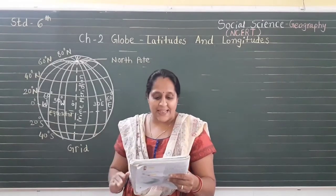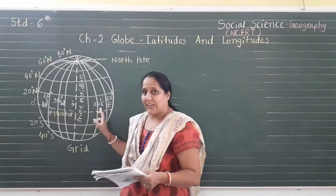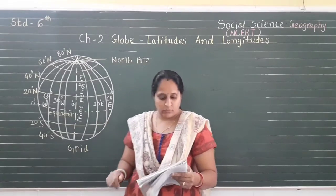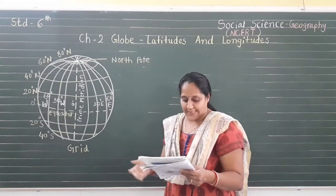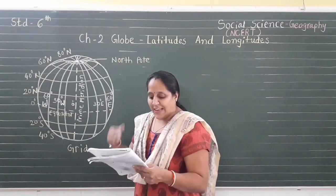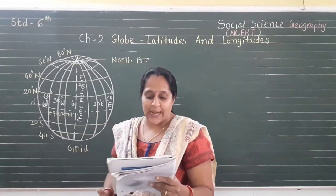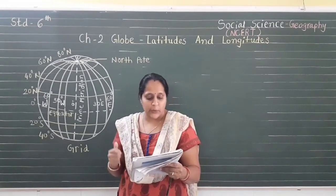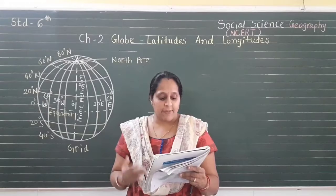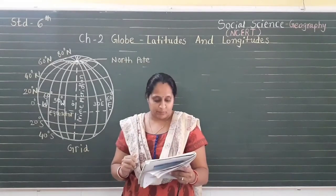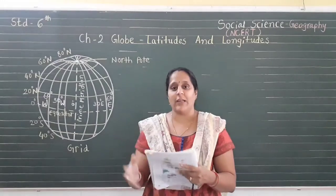The longitude of a place is followed by the letter E (eastern hemisphere) or W (western hemisphere). Looking at the grid, these are useful to locate any place on the globe using its latitude and longitude. For example, Dhubri in Assam is situated at 26 degrees north latitude and 90 degrees east longitude. Through this we find out the exact location of any place.